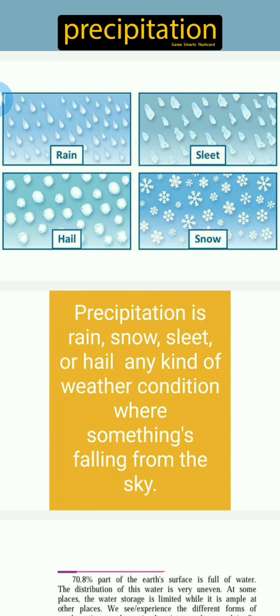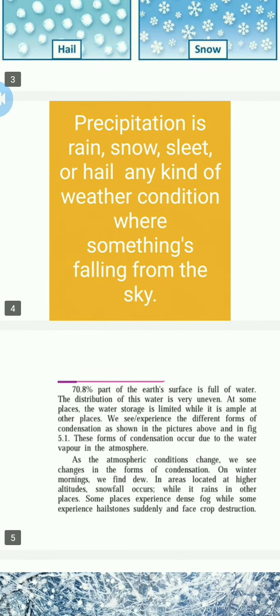In snow areas, you can experience snow. At the same time, when snow is not fully formed, it will come in the form of hail. So all of that is called precipitation.